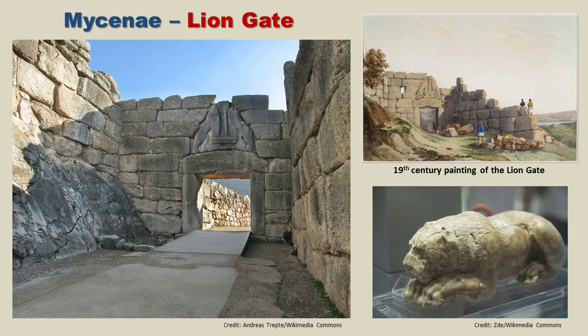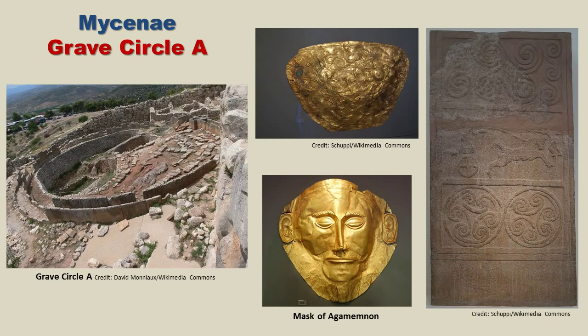Now let's talk about Grave Circle A, which is right past the Lion Gate. This was uncovered by Heinrich Schliemann, a German archaeologist who wanted to find evidence that the Trojan War was a real historical event. He traveled across the Mediterranean looking for evidence and ended up at Mycenae. Grave Circle A was one of the most important finds in Bronze Age Greece — he found several burial shafts containing warriors, some with golden funeral masks over their faces, along with signet rings, breastplates, and dozens of swords and daggers. This gives us a very good idea of the weapons the Mycenaeans were using.